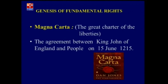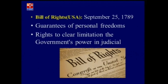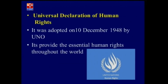Let us discuss where the first genesis of fundamental rights occurred. Fundamental rights first appeared in the Magna Carta, also known as the Great Charter of the Liberties — an agreement between King John of England and the people on 15 June 1215. Next, in America, fundamental rights are known as the Bill of Rights, adopted on 25 September 1789. You are also familiar with the UDHR — Universal Declaration of Human Rights — adopted on 10 December 1948 by the United Nations General Assembly, providing essential human rights throughout the world.